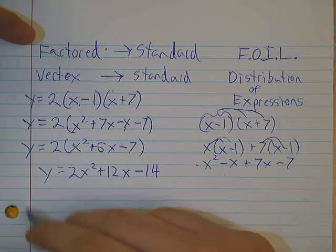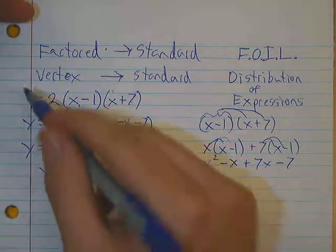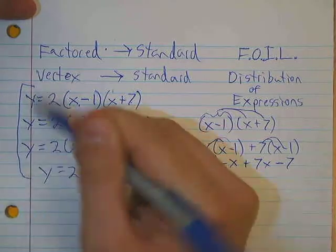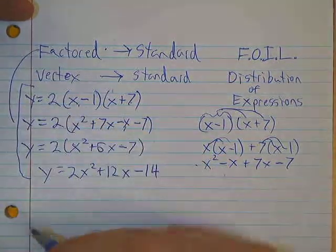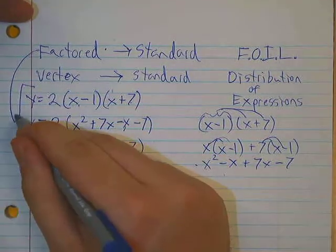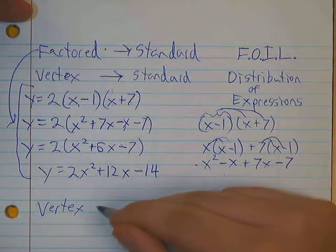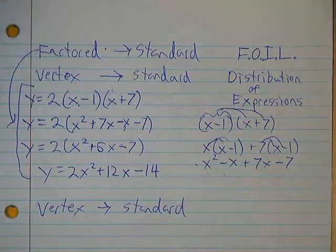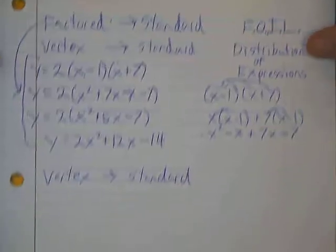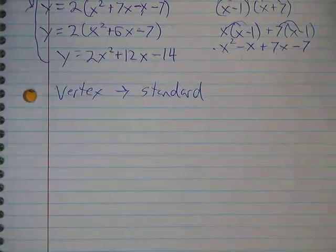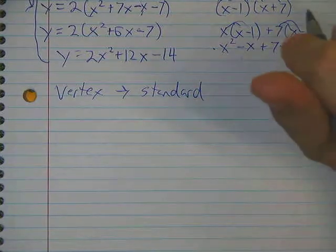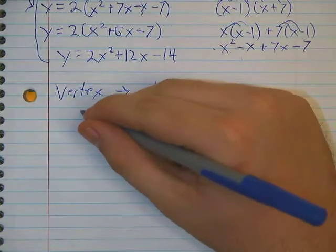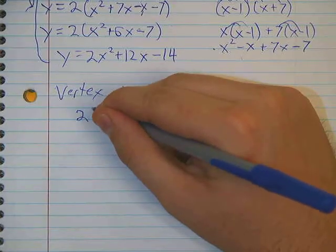Now let's look at how we would go from vertex form to standard form. Vertex to standard. Now vertex to standard is a little bit more complicated, only because there's more things to keep track of.